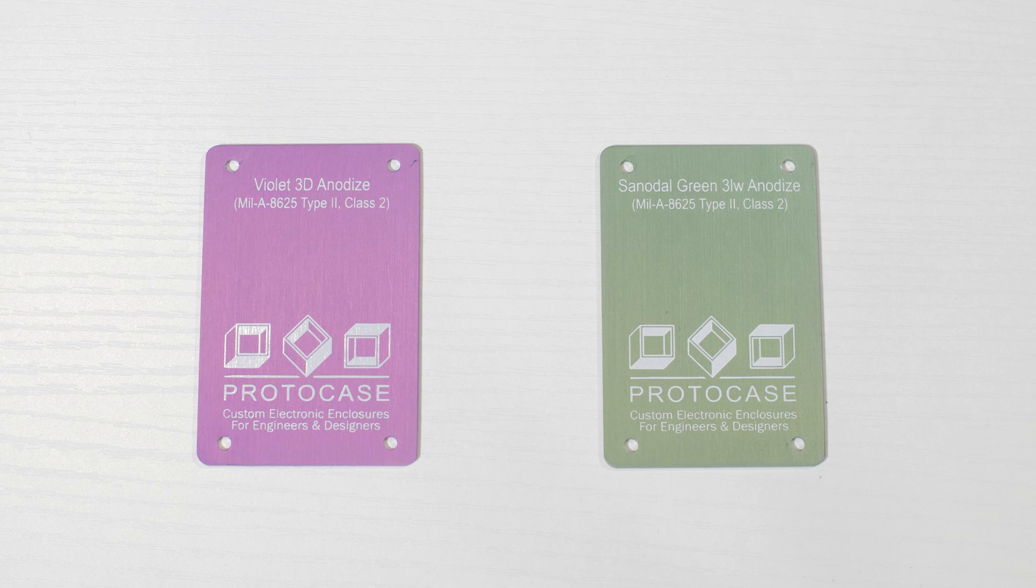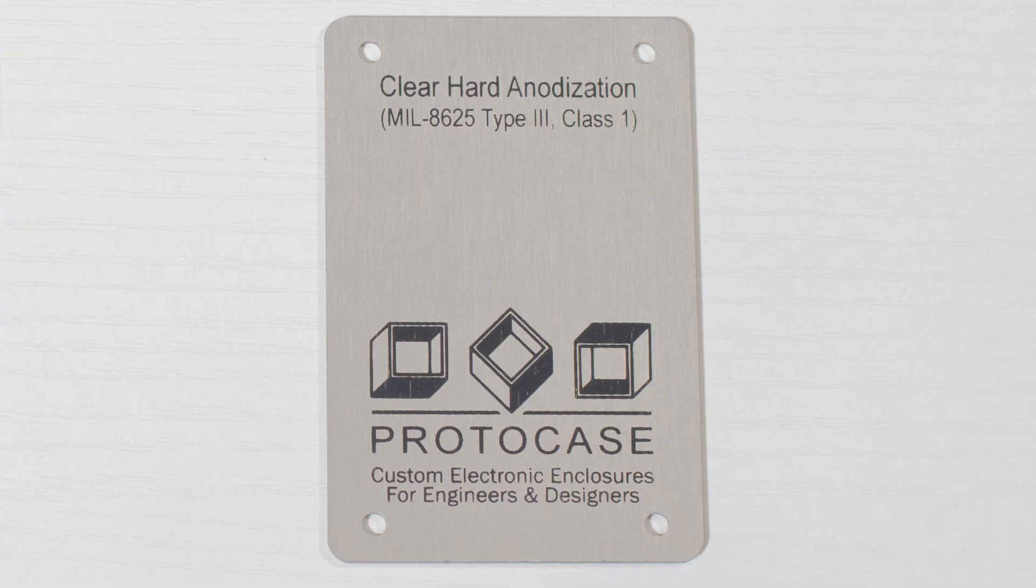If you're using a Type 2 anodized finish, it will add between 4 to 8 ten-thousandths of an inch thickness, so less than 1 thousandth of an inch. Type 3 will add 1 thousandth of an inch thickness.